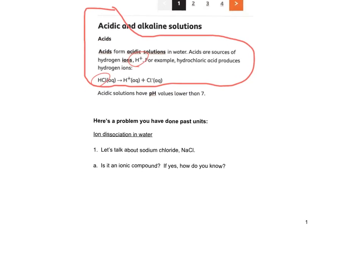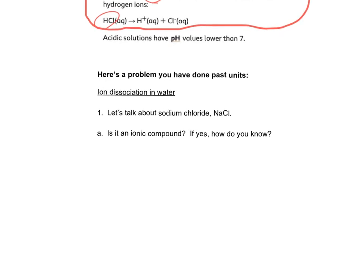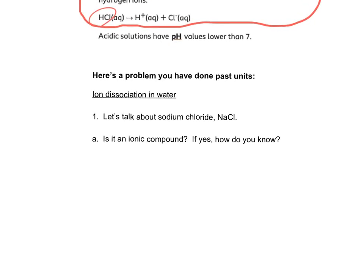So next I've connected this. This is not an acid here, but I've connected it to a skill that you have. This is, let's talk about sodium chloride. And so we're going to do a similar skill as this. I think this has got four parts, A, B, C, D. We're going to do a similar skill with molecules that are acids that form acidic solutions. But this is just an ionic compound. Is it an ionic compound? Yes. This is a question I asked you many times during an earlier unit.